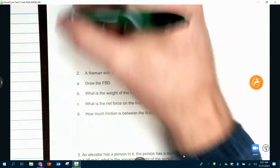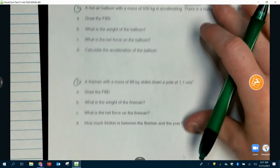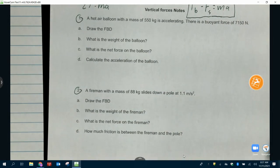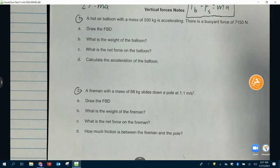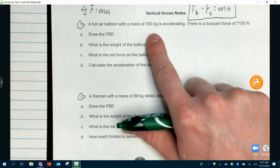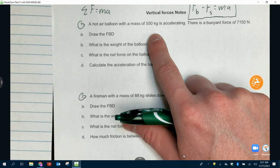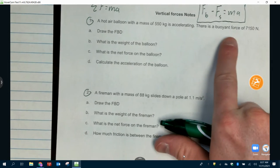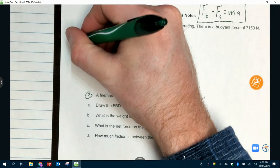Number one, we got a hot air balloon problem. Circle hot air balloon, circle fireman, circle elevator. These are all on the test. I always put these three scenarios on the test. Hot air balloon, fireman, elevator. I might put, like, two of three on it. But last year, I had all three. Number one is draw a free body diagram, or part A is. We've got a hot air balloon with a mass of 550 kilograms. That's, like, 1,200 pounds. Hot air balloons are actually really, really heavy. I didn't know that until I Googled it. They're really heavy. Now, there's a buoyant force of 7,150 newtons that's pulling it up into the air.